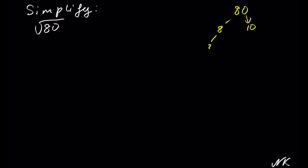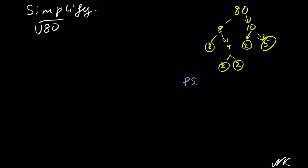8 can be broken down into 2 times 4. 10 can be broken down into 2 times 5, and 4 can be broken down into 2 times 2. So we have 4 factors of 2 and 1 factor of 5 making up 80. Any factor that has a pair is a perfect square, so the perfect square is 2 times 2 times 2 times 2, which is 16.